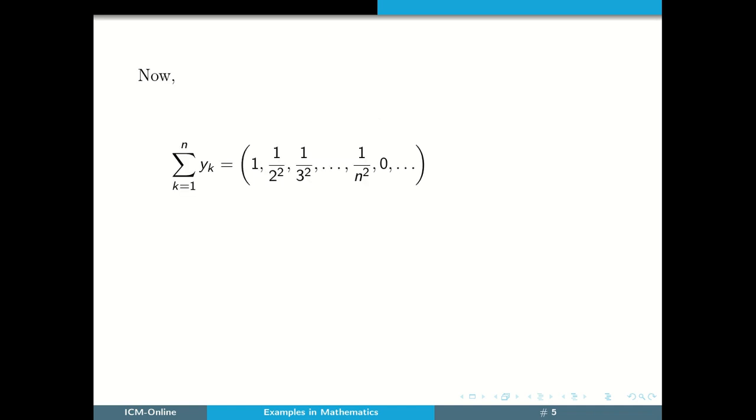Now, the sequence of partial sums. That is, summation k equals 1 to n yk equals the sequence 1, 1 by 2 square, 1 by 3 square, etc., 1 by n square, comma 0, 0, etc.